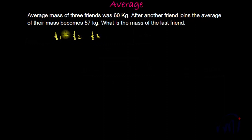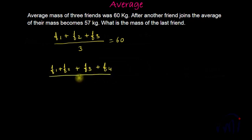The average of their masses, that means f1 plus f2 plus f3 divided by 3, is equal to 60 kgs. And after another friend joins, the average of their masses becomes 57 kgs. So suppose the mass of friend 4 is f4, and when this fellow joins, the average becomes f1 plus f2 plus f3 plus f4 divided by 4, which becomes 57 kgs. Then we have to find the mass of the last friend.